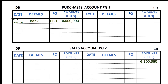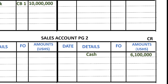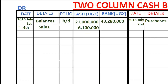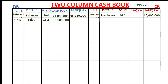The sales account is found in the general ledger. To complete the double entry, we go to the sales account and credit it with $6,100,000. The cash account is found in the cash book on page one, CB1. The sales account is on page two of the general ledger, so in the folio column we put GL2, meaning general ledger page two. You should be very comfortable with double entry rules for assets, liabilities, expenses, revenues, and equity.